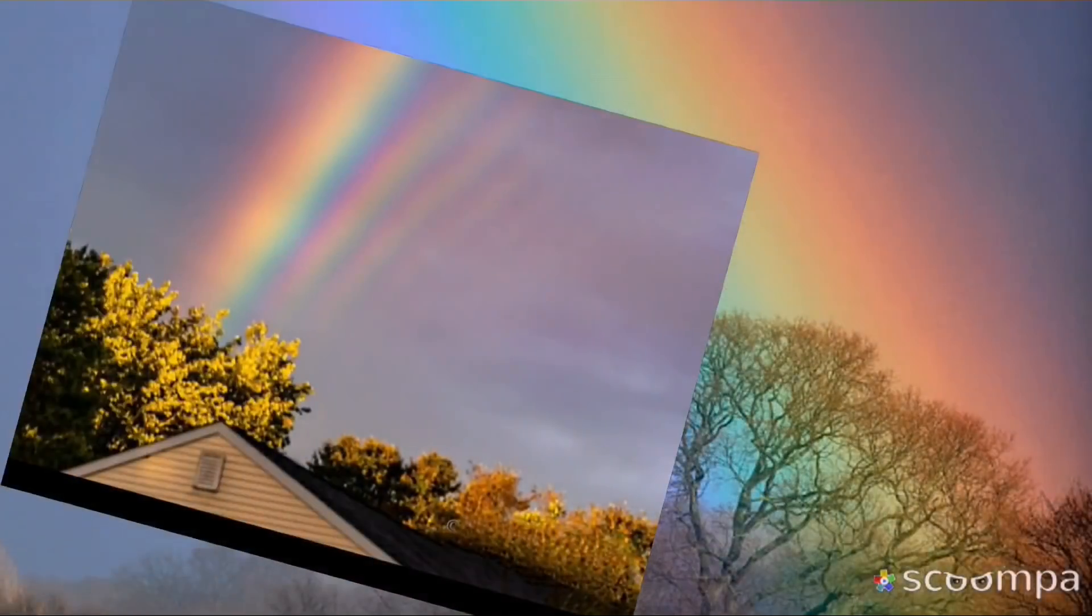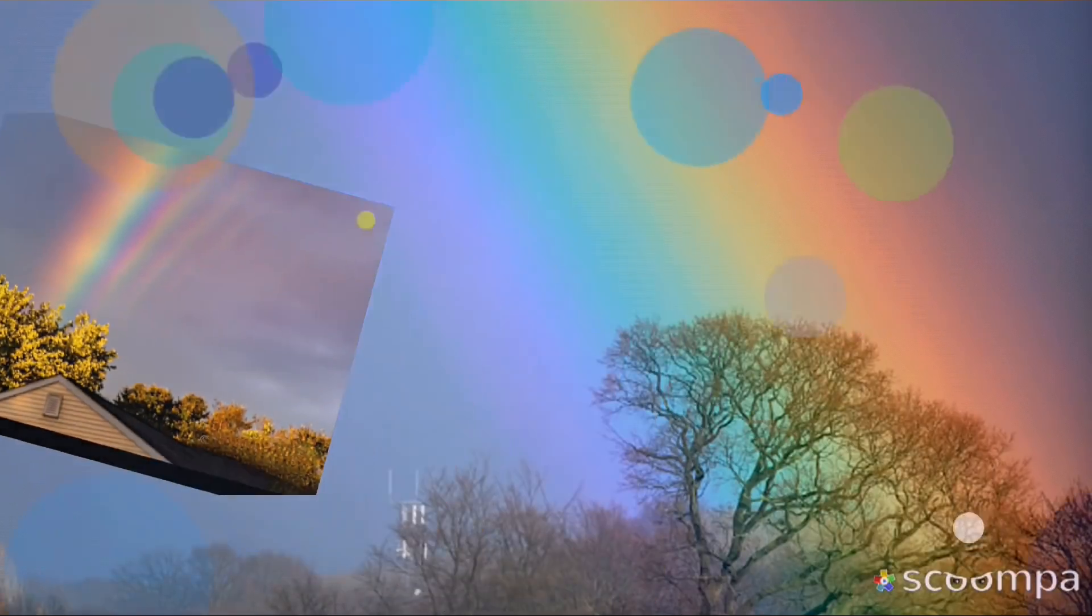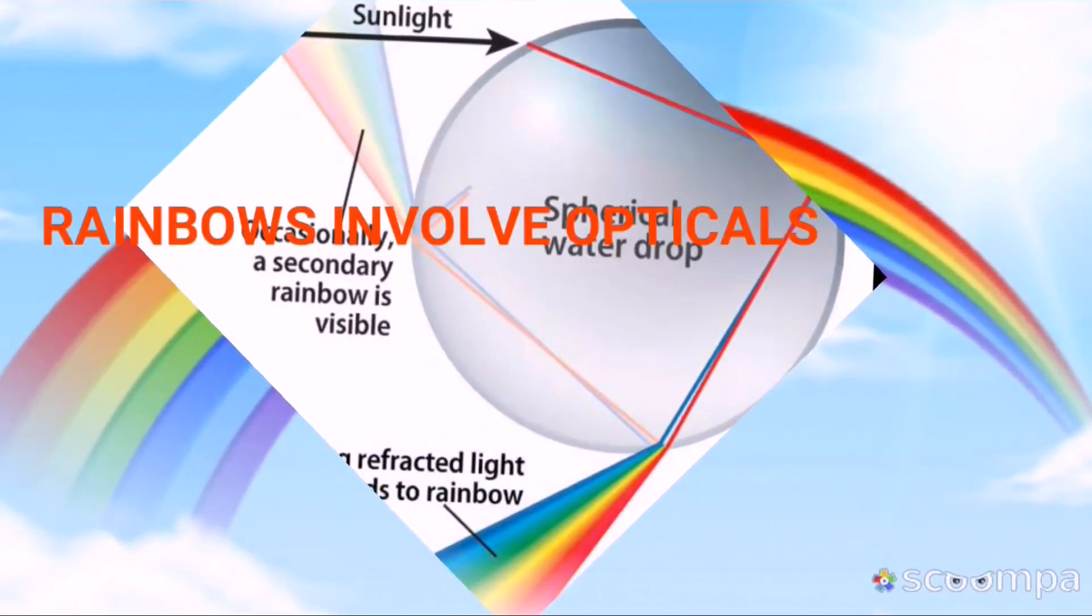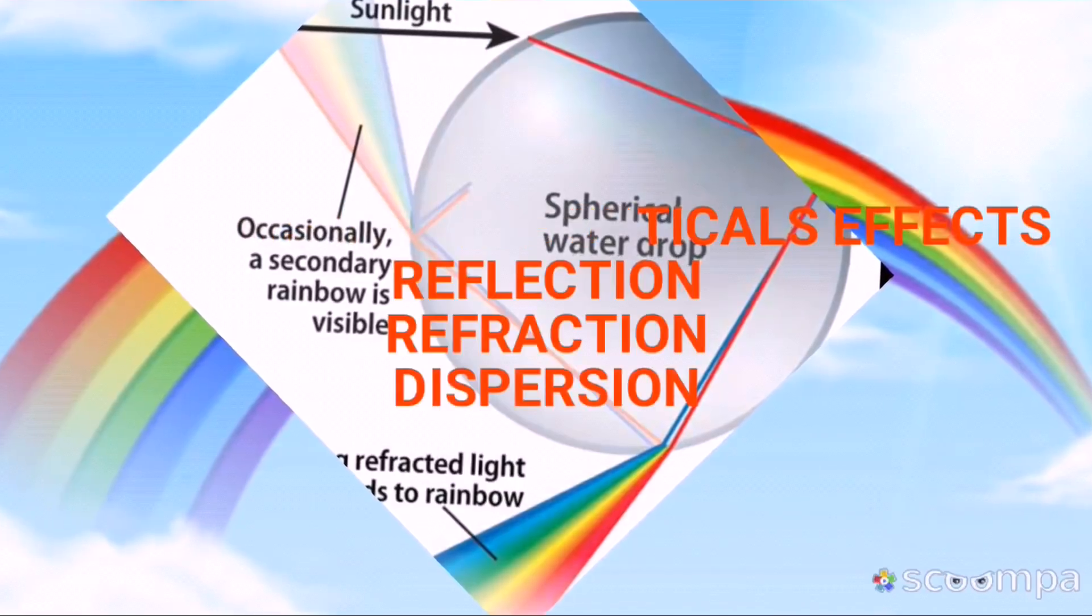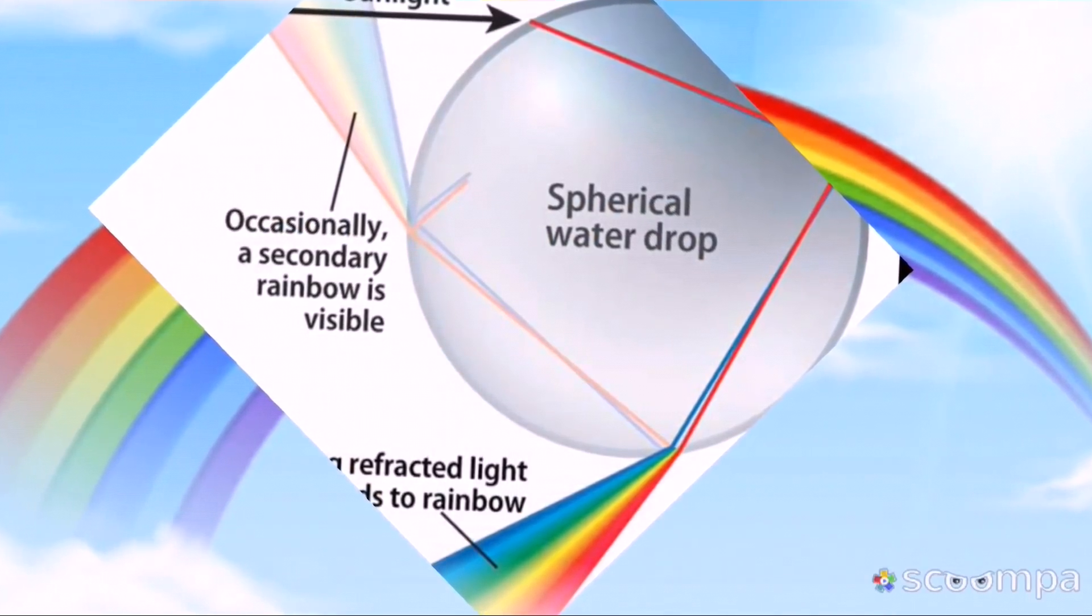You will notice that refraction of sunlight takes place at two places and reflection of the light from the back of the droplet. These water droplets act as prisms and hence white light is separated into seven colors.